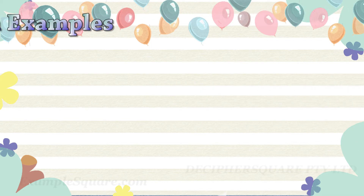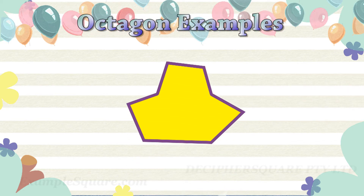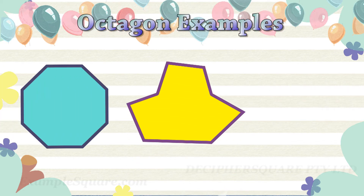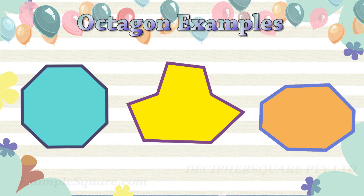These are some examples of octagon shapes. If all eight sides of an octagon are equal and all interior angles are equal, then it is a regular octagon. Otherwise, it is an irregular octagon.